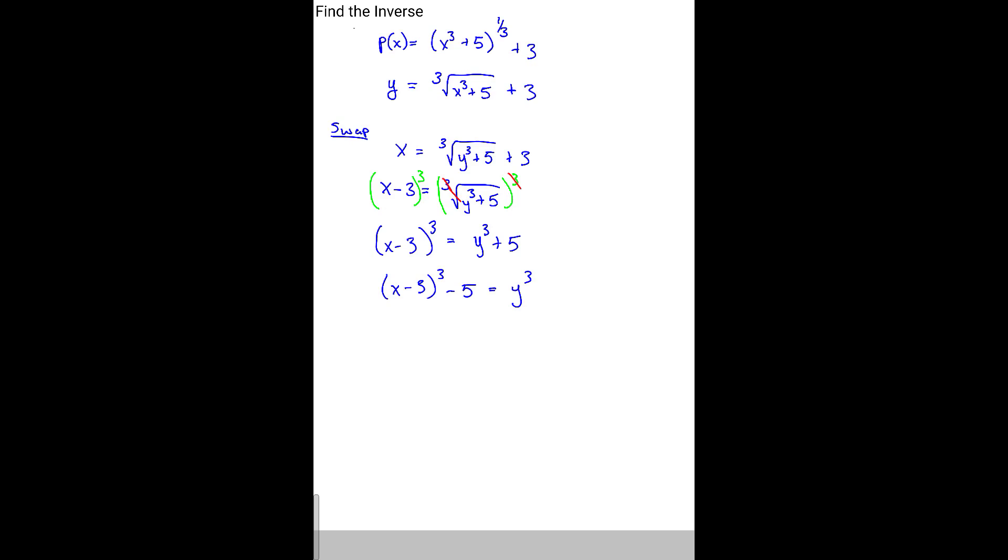Now, in order for us to get the y value by itself, here we're going to take the cube root on both sides. Now, what a lot of people want to do, the cube root and the cube normally would cancel out. That's fine, that's understandable. However, that's not the only thing we're taking the cube root of on the left-hand side. We have this minus 5 here, so we can't just go ahead and cancel the cube root on the 3. We have to take into account the 5, meaning you can't actually take the cube root of all that.